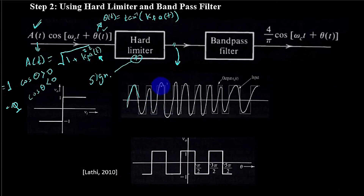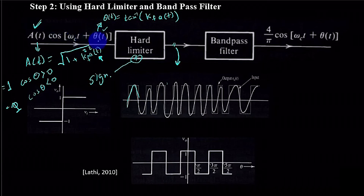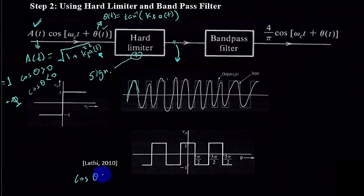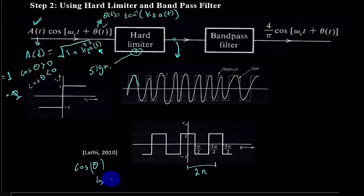We have now fixed one problem. Remember there are two issues: the first is that the amplitude is a function of time. Using the hard limiter we have fixed it, giving a constant amplitude of +1 and −1. The other issue is that cos(ω_c·t + θ(t)) has an argument that is also a function of time, which prevents us from seeing the periodicity. For simplicity, let us assume we have a function cos(θ).